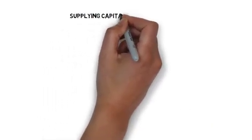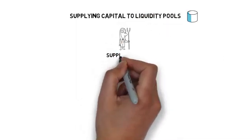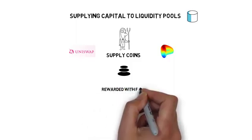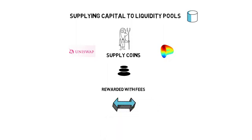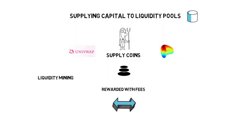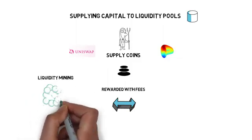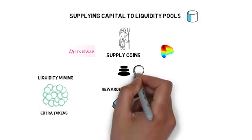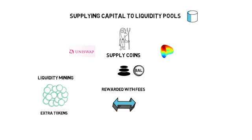Yield farmers can also supply coins to one of the liquidity pools in protocols like Uniswap, Balancer, or Curve, and get rewarded with fees charged for swapping different tokens. Liquidity mining can supercharge this too — by supplying coins to certain liquidity pools, farmers are rewarded with extra tokens. Balancer is a good example of a protocol that rewards liquidity pool suppliers with extra BAL tokens, increasing their APY.